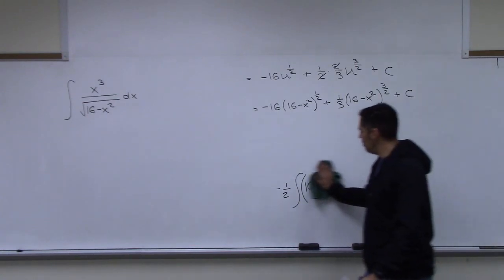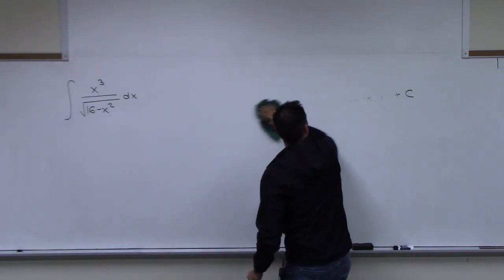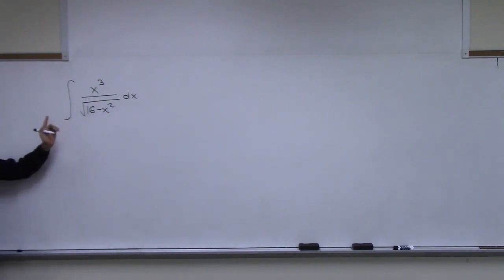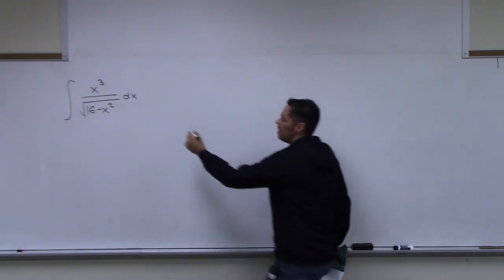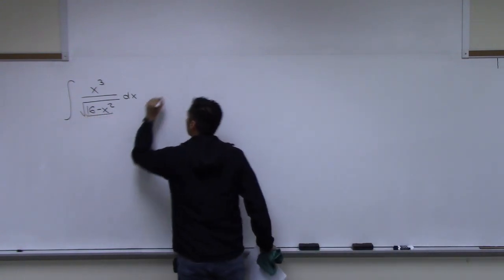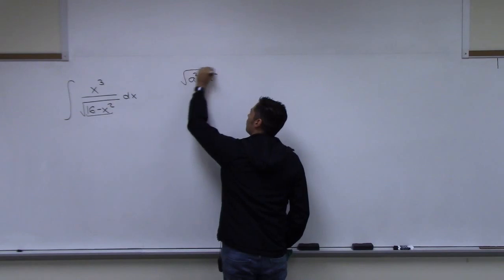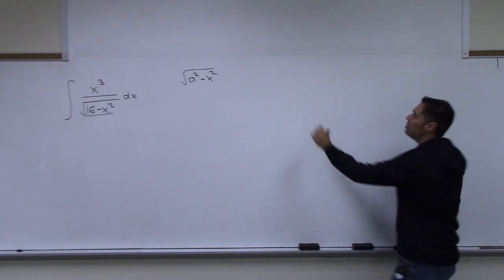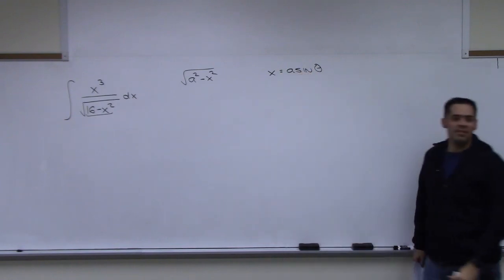Now let's do it the other way. We look back at the integrand and see the radical √(16 − x²). That looks like a squared minus x squared, so we're thinking trig substitution. The substitution we make is x = a sin theta, and in this case a is four, so x = 4 sin theta.